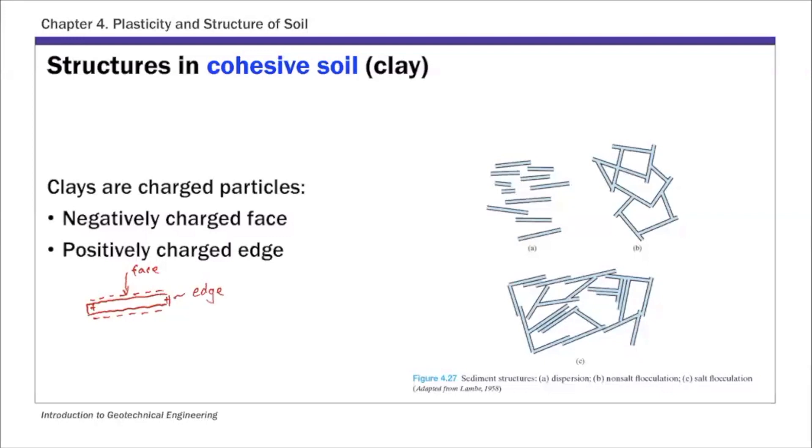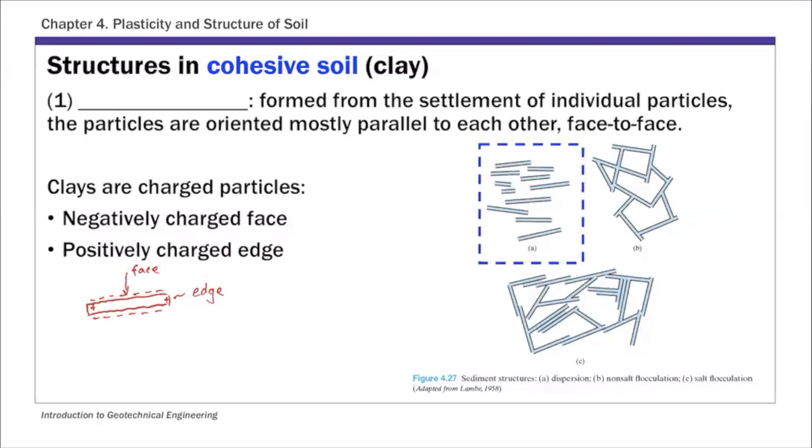And because the particles are charged, these negative and positively charged faces and edges, they may be attracted to each other. And that dictates the type of structure we see in cohesive soil like clays. So there are basically two types of structures in cohesive soil. The first type I highlighted here in this picture, the top left figure, this is called dispersed structure.